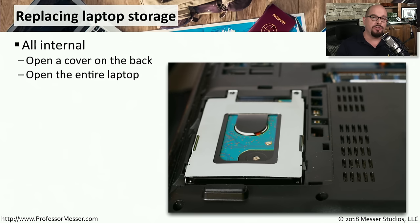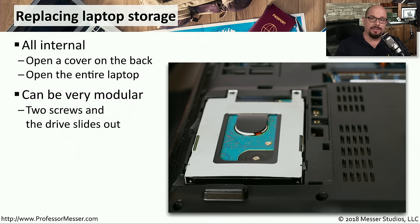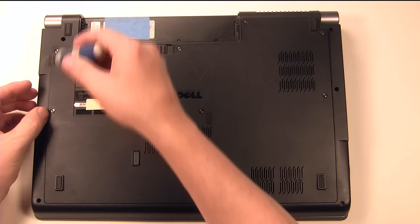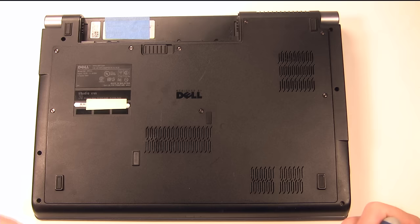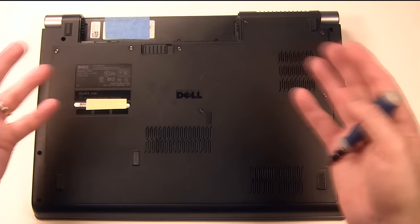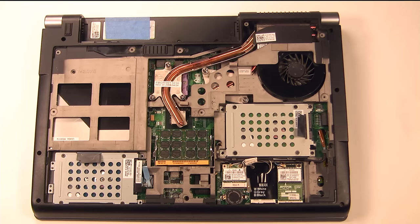The storage drives in a laptop are usually accessible by removing a cover on the back or removing the entire back of the laptop. These are usually relatively modular and easy to swap out — you take the cover off, remove a couple of screws, and then remove the drive. Here's the back of a typical laptop. This one requires you to remove a number of screws and then the entire back panel. Some laptops have a single panel to access individual components such as the memory modules.